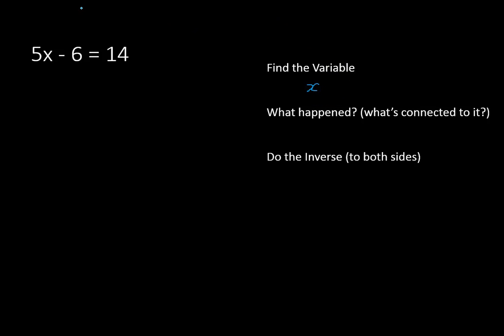So we found our variable, but there's two things connected to it. Notice that when we're asking what's connected to it, we're multiplying times 5, and we're also subtracting 6. Those are two things that are connected with our variable.